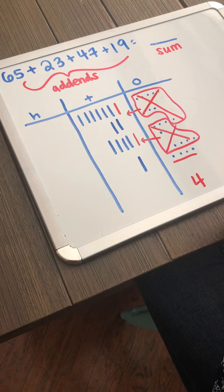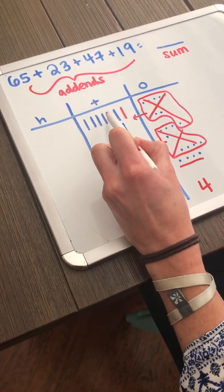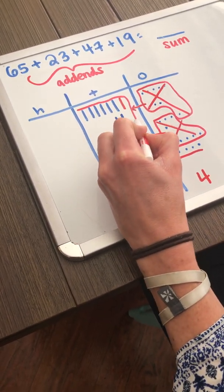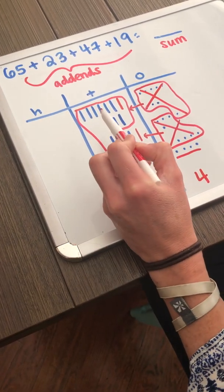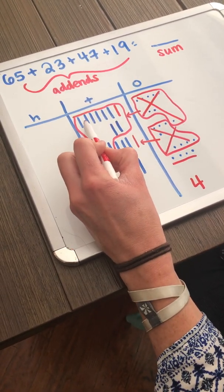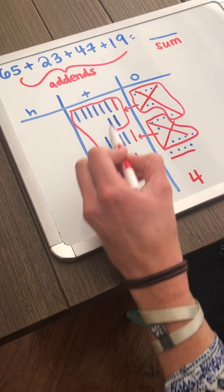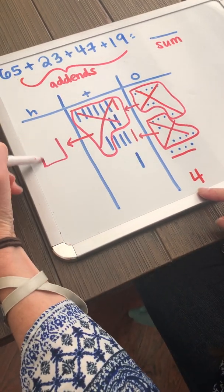So, now let's bundle our tens. I have way more than 10 tens. 1, 2, 3, 4, 5, 6, 7, 8, 9, 10. So, I'm going to get a group of 10 tens together. It doesn't matter which 10 I pick. But sometimes when they're close together, it helps. 1, 2, 3, 4, 5, 6, 7, 8, 9, 10. 10 tens can be exchanged for 100.